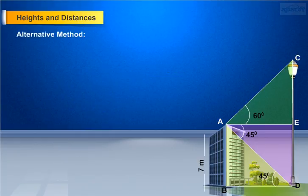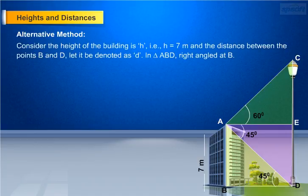Let us see an alternate method to solve this problem. Consider the height of the building as H, that is H equals 7 meters, and the distance between points B and D denoted as D. In triangle ABD, right angle at B.